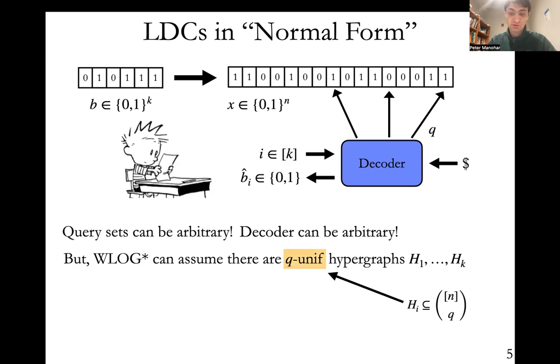A q-uniform hypergraph is simply a collection of subsets of size q of this n, the number of bits in the encoding, where you have one hypergraph for each bit b_i. You should think of this hypergraph as specifying for the decoder when I'm trying to decode the ith bit—these are the sets that the decoder will query. We can assume that the hypergraphs are actually matching. That is, the hyperedges within each h_i are actually disjoint. Moreover, the h_i's have a linear number of hyperedges, linear in n. So of course, you can only have at most, say, n over q hyperedges that are matching. So this is essentially saying that the matching is some constant fraction away from a perfect matching.